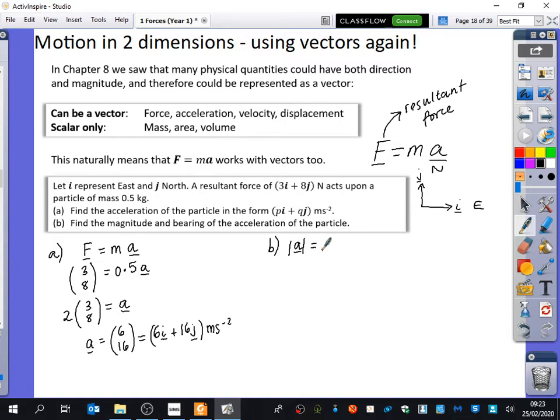You do 6 squared plus 16 squared, and then square root them. Good. And then you square root them added together. That's going to be our magnitude. That comes from Pythagoras, of course. So the magnitude of our acceleration is now, what's that? Which is 2 root 73, which is 17.1 meters per second squared to three significant figures.